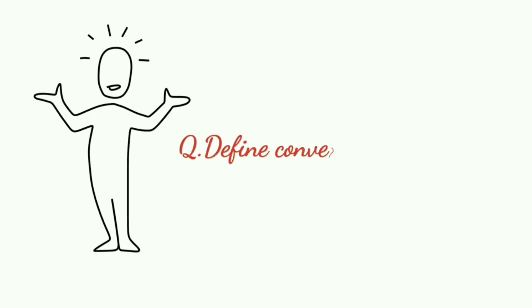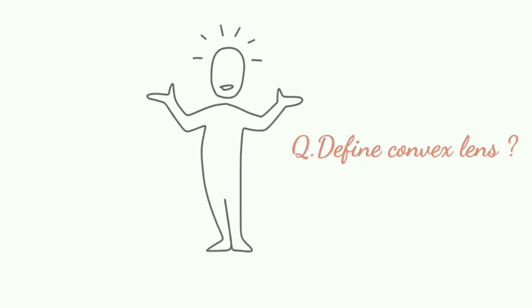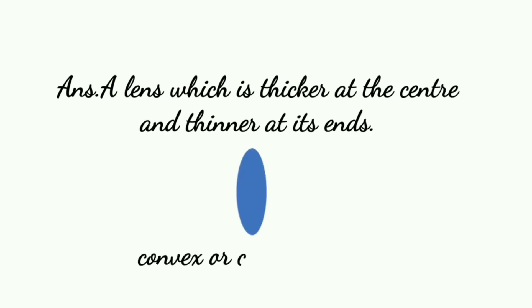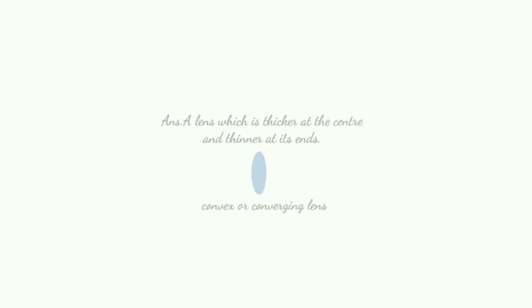Next: define convex lens. Convex lens kya hota hai? A lens which is thicker at the center and thinner at its ends. Iska diagram is tarah se bana hota hai. Isko hum convex lens aur converging lens bhi bolte hain. Woh lens jo center mein mota hota hai aur ends mein patla hota hai. Aur convex lens un specs mein use hota hai jisko door dekhne mein problem hoti hai — jisko door ka clear nahi dikhta.